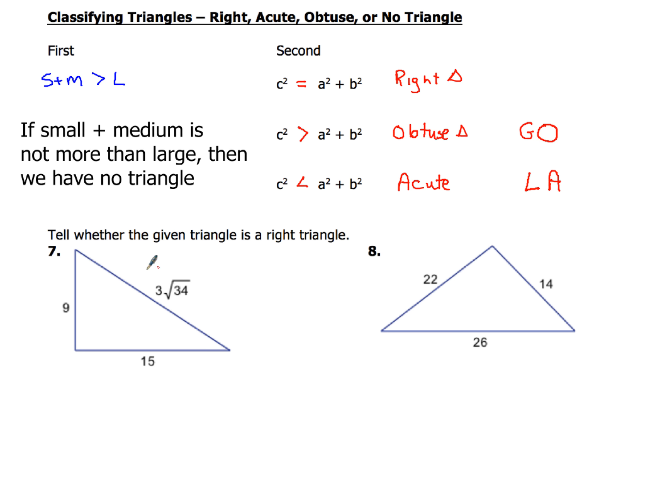Now here in example number 7, we've got to make sure that this triangle, so the first thing we do, it looks like 9 and 15 are the small and medium sides, and 3 root 34. So let's kind of estimate this.